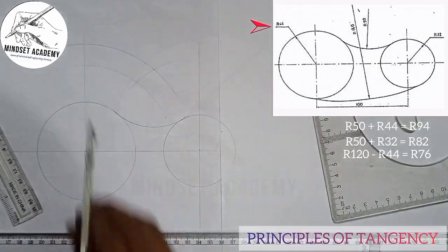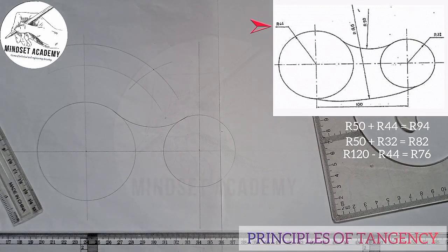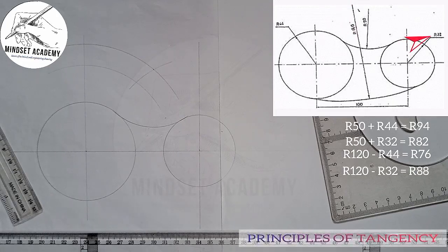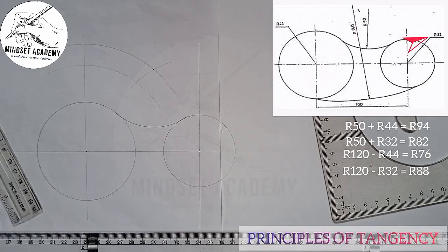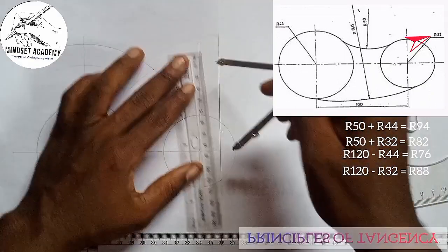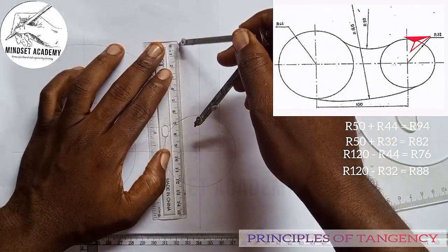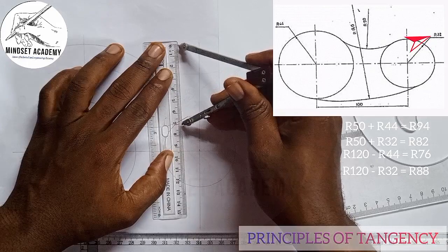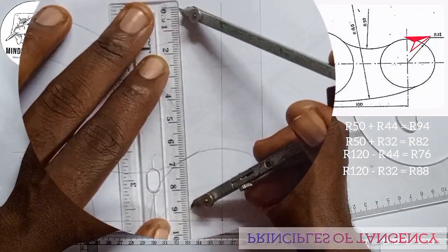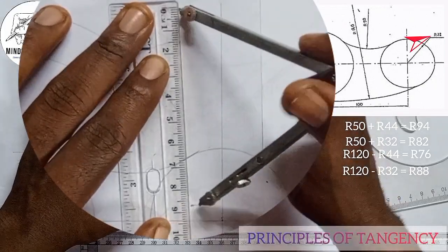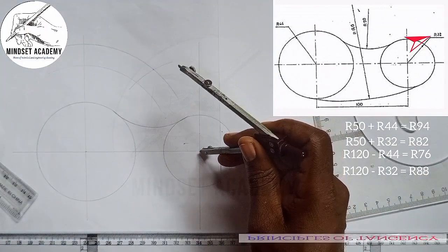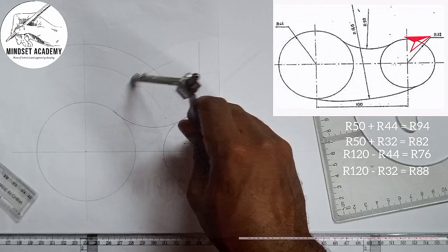I'll go to the other one also: subtract 120 from 32, so we're having 88. I'm going to measure 88 on my meter — this is 80 and this is 88 here.